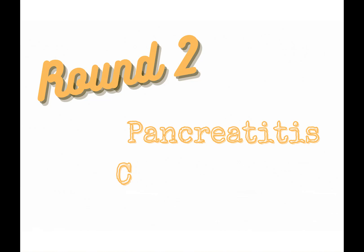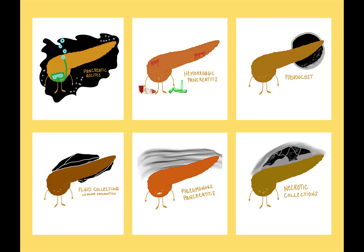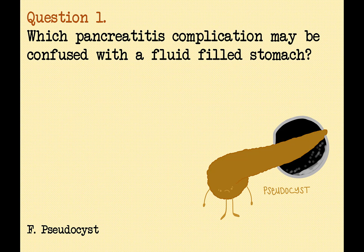Round 2: Pancreatitis Complications. There are many complications that can arise in a patient with acute pancreatitis. We're going to review six of them. You'll be given 10 multiple choice questions with 5 seconds to determine your answer. Keep track of your score. Question 1: Which pancreatitis complication may be confused with a fluid-filled stomach? The correct answer is pseudocyst. Pseudocysts form near the stomach in the lesser sac and may be overlooked.